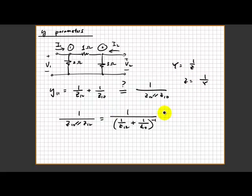You can see from here why sometimes I write this way and why sometimes I clarify this way - because they both mean the same thing. By going through the math you will realize that this will be 1 over z10 in parallel with z12.